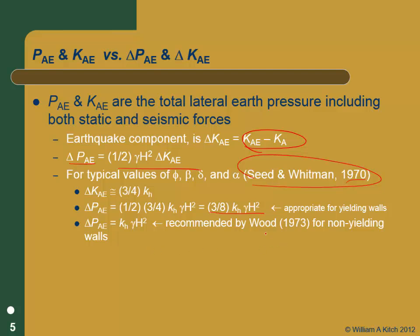Wood made a recommendation for non-yielding walls — like if you're designing against really stiff walls. All the previous stuff is for yielding walls. Wood looked at the culvert problem where you've got a culvert, an earthquake coming through, soil moving on both sides — a really rigid buried structure. His recommendation gives quite a bit higher pressures than you'd get for a yielding wall. If you need to deal with rigid non-yielding walls, go read Wood's paper, although there are still some problems with it.